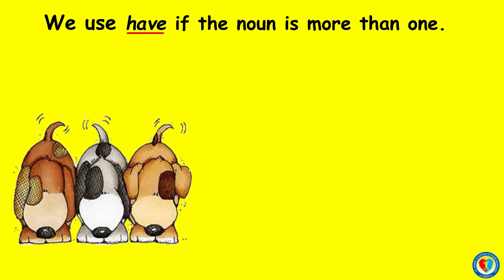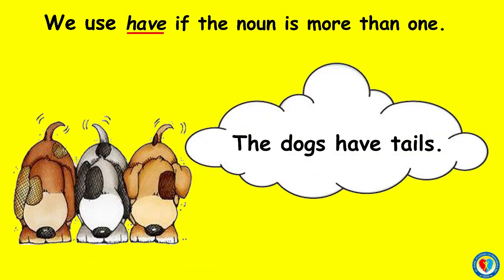Look at these pictures. What is the name of these animals? You are correct! These are dogs. How many dogs do you see? There are three dogs. And because the number of dogs is more than one, we are going to use have. The dogs have tails.